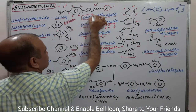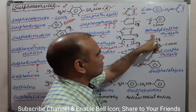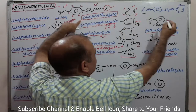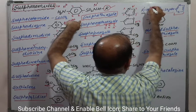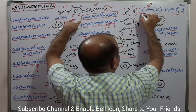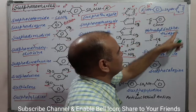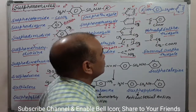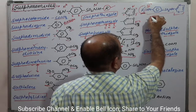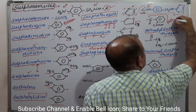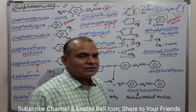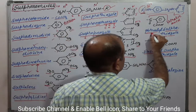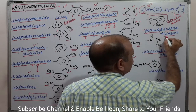Sulphathiadiazole contains the thiadiazole ring at the R position on N1. Now, if we substitute R with a thalyl group — thalic acid is a benzene ring with two carboxylic groups at ortho positions — the thalyl group gives thalylsulphathiazole. This is very straightforward.